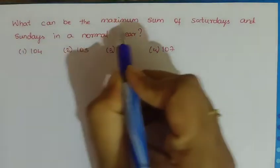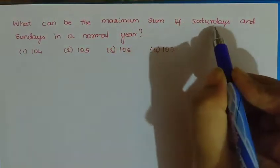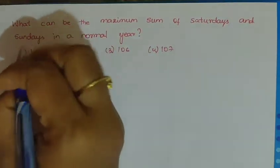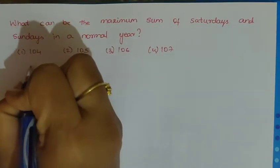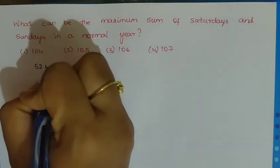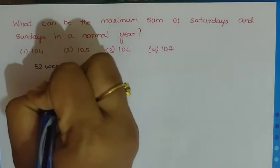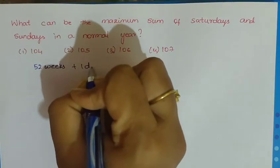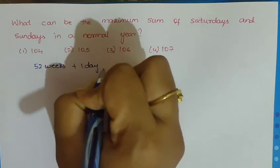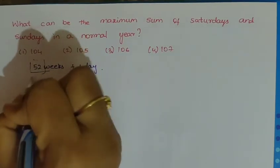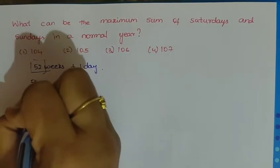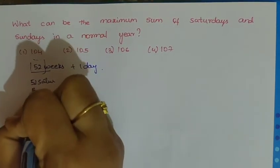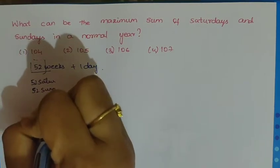What can be the maximum sum of Saturdays and Sundays in a normal year? In a normal year, we have 52 weeks plus 1 odd day. In these 52 weeks, we have 52 Saturdays and 52 Sundays.